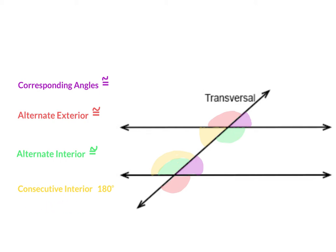Consecutive interior angles are inside the parallel lines and on the same side of the transversal. The transversal is the line that cuts — that intersects — two or more lines. That is your transversal.